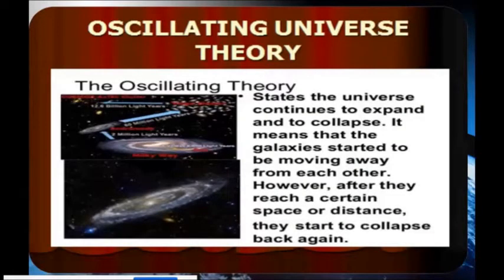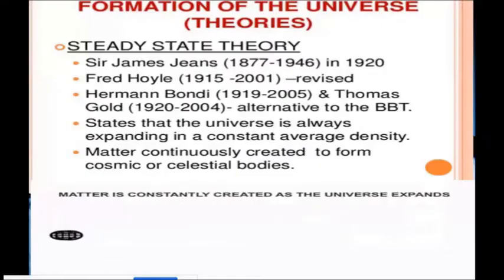And we have here the oscillating universe theory. The state that the universe continued to expand and then collapse, it means that the galaxy of the started to be moving away from each other. However, class, after they reach a certain space of a distance, they start to collapse and back again. It means it is a cycle, class. There is another collapse and the next one, and that is oscillating universe theory.